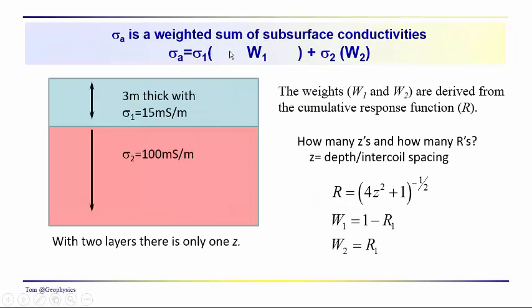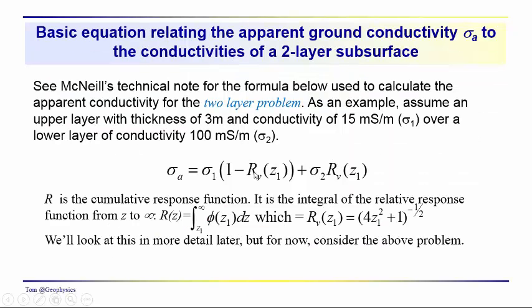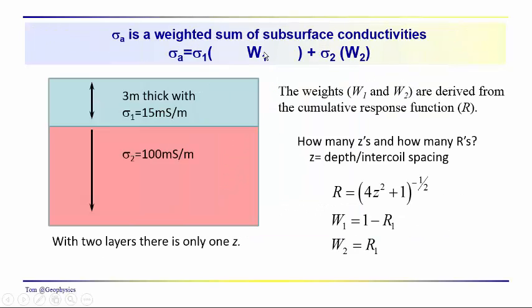The equation that we're using, just to back up a couple, this equation here, we've got these two terms in parentheses. These are just weighting factors. This is just a linear combination of the conductivities of these two layers, sigma one and sigma two. They contribute in proportion to these weights. We have one z and we have one R. So we have these two weights: one minus R1 and R1.